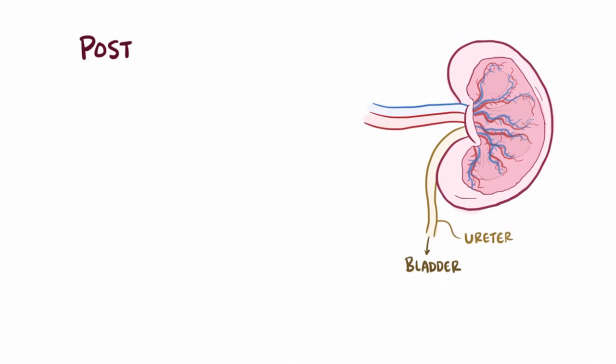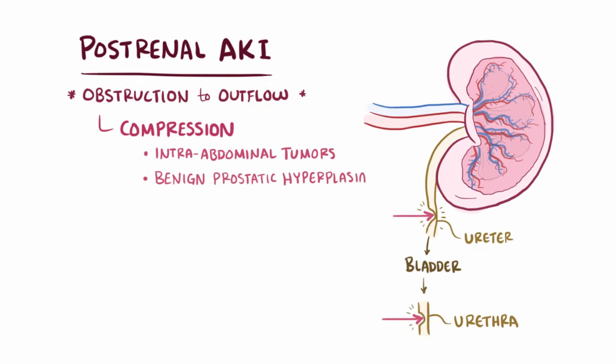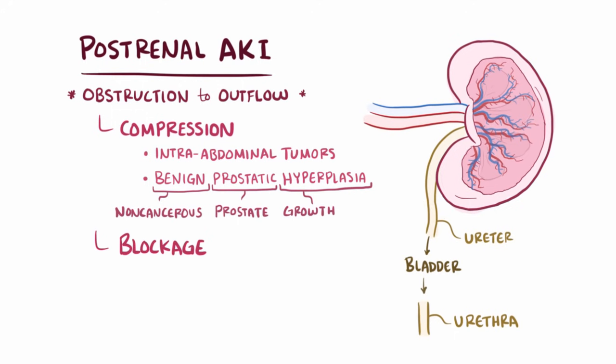Alright, so with post-renal AKI, there's some obstruction to the outflow from the kidneys. Reduced flow can be a result of something compressing the ureter, like intra-abdominal tumors, or compressing the urethra further down, like from benign prostatic hyperplasia, a non-cancerous growth of the prostate gland, both of which sort of pinch the ureter and urethra shut. Also though, it could be from some blockage inside, like kidney stones getting stuck in the ureter, or urethra, which can actually plug it up.